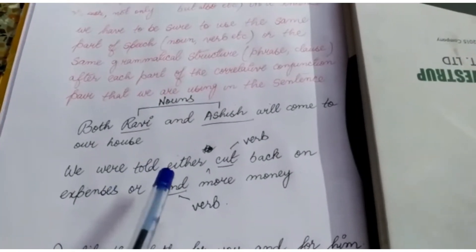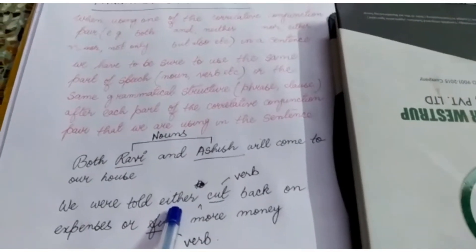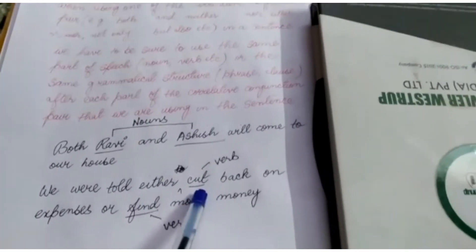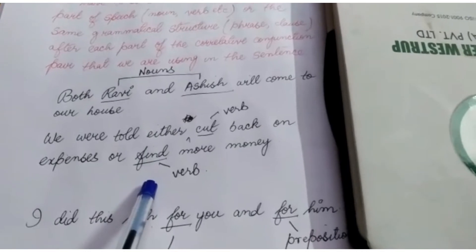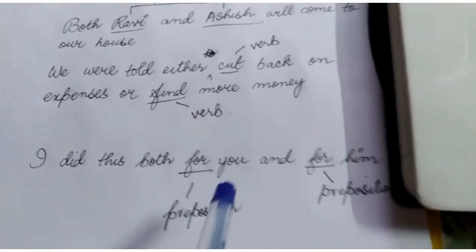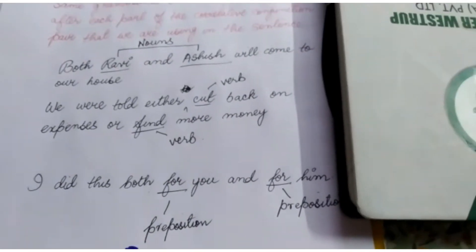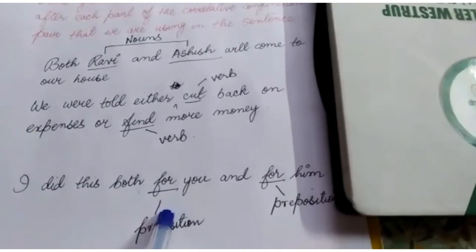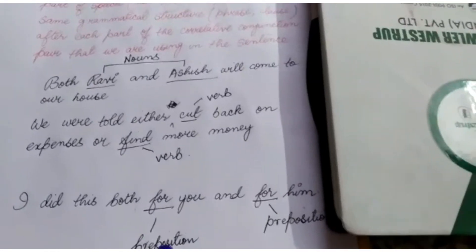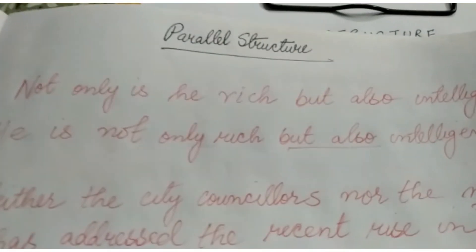In 'We were told either cut back on expenses or find more money,' the pair 'either...or' is used, and each part is followed by a verb — 'cut' and 'find' — following the rule of parallel structure. In 'I did this both for you and for him,' the pair 'both...and' is used, and each part is followed by the preposition 'for,' so this sentence also follows the rule of parallel structure.